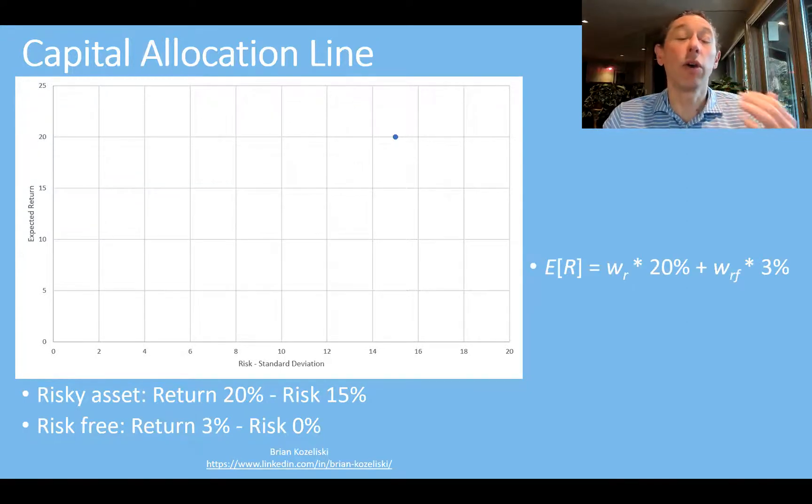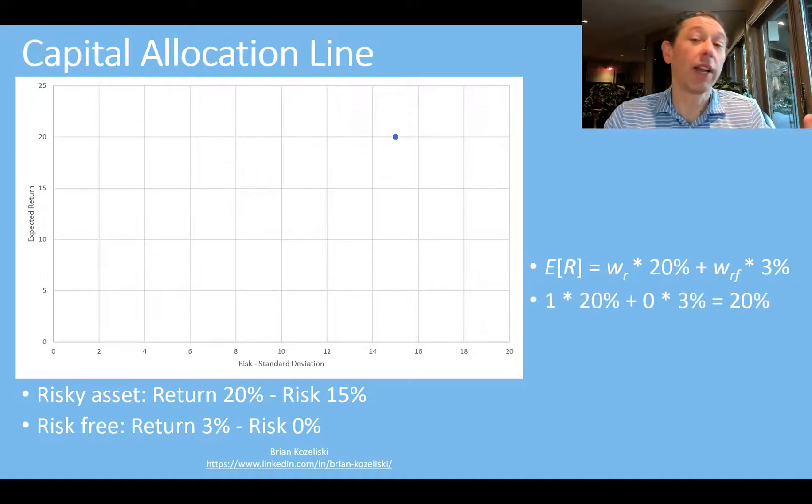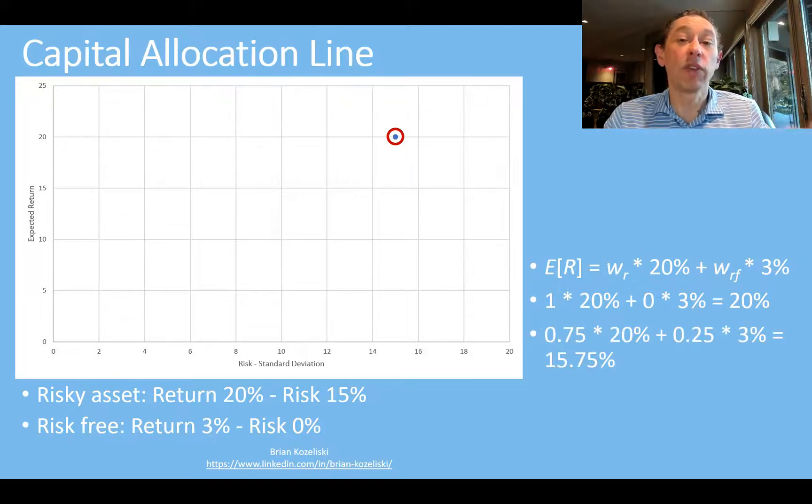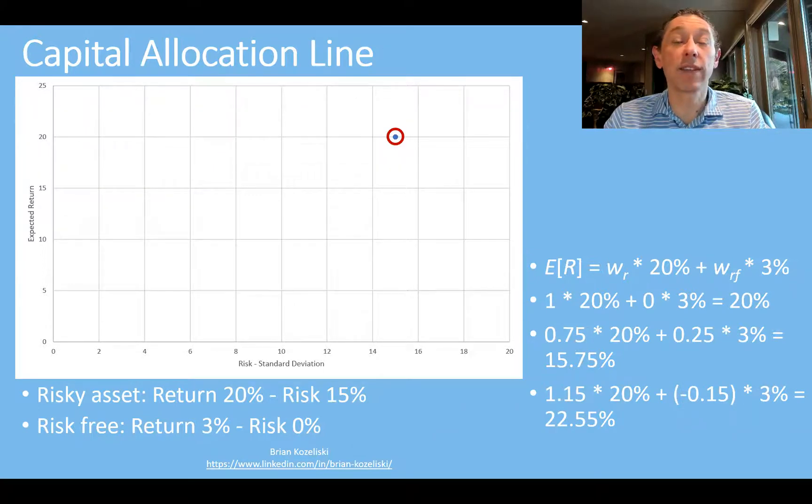We could say, for example, here we're going to have our expected return is going to be equal to the weight of the risky asset times its return of 20% plus the weight in the risk-free asset times its return of 3% to come up with an expected return. For example, if we just did 100% in that risky asset, we're going to have a return of 20%. That's going to put us right here on this chart. Now, we could say, let's go 75% of the risky asset times its return and 25% of the risk-free asset. That's going to give us a return of 15.75%. This is basically where you are investing in the risk-free asset. We can also borrow the risk-free asset. So here we can say, let's borrow 15% at the risk-free rate, and then we can invest 115% in the risky asset. That's going to give us a return of 22.55%.